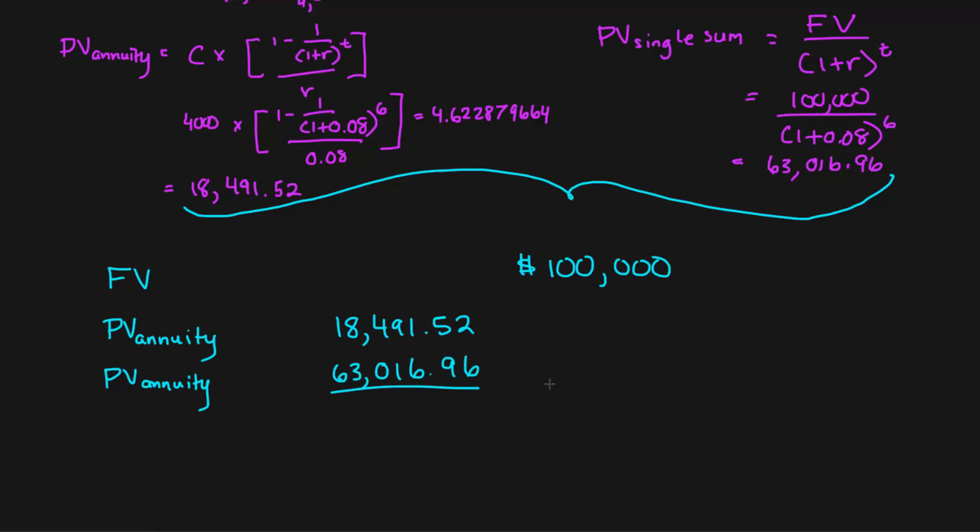While the present value single sum is going to be $63,016.96. And this gives us a difference of, how much is that going to be? Well, first I should actually total it, it's going to be $81,000—totaling these two, $81,508.48. And the difference is $18,491.52.